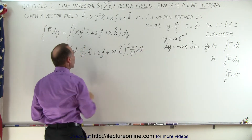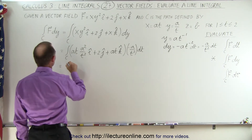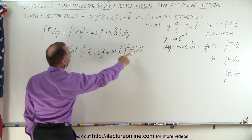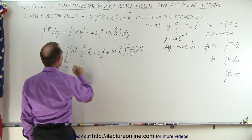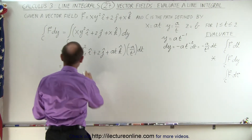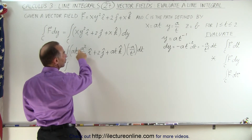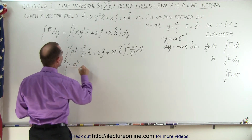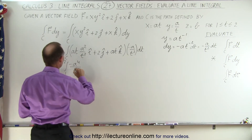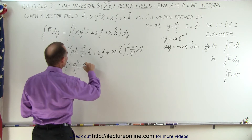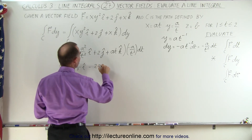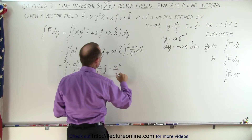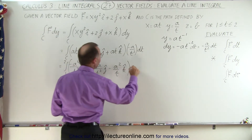We multiply that — minus a over t squared times dt — with each of the three terms inside the parentheses. This becomes equal to the integral from 1 to 2, because now everything is in terms of t and the limits of integration for t are from 1 to 2. We get minus a to the fourth divided by t cubed in the i direction, then minus 2a over t squared in the j direction, and minus a squared over t in the k direction, times dt.